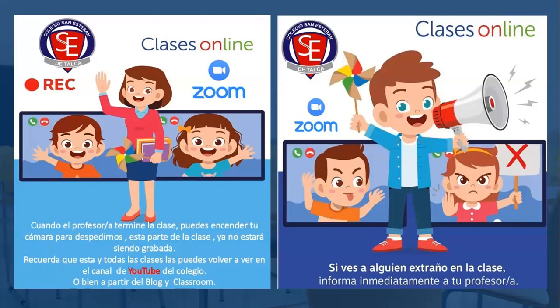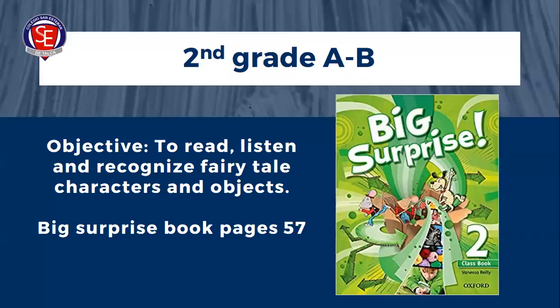Si ves a alguien extraño, si ves a alguna persona que no pertenezca a la clase, recuerda informar inmediatamente al profesor — en este caso a mí, que aparezco con el nombre de Colegio San Esteban — o también a Miss Karen Navarrete, que también está conectada. Vamos a leer el objetivo para los 2° A y B usando el libro The Big Surprise Number 2: leer, escuchar y reconocer los personajes favoritos, personajes y objetos. El día de hoy vamos a comenzar con un breve repaso de la unidad anterior y también vamos a reconocer palabras nuevas relacionadas con personajes y objetos presentes en los cuentos de hadas.